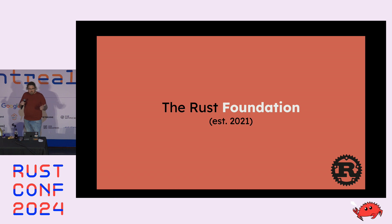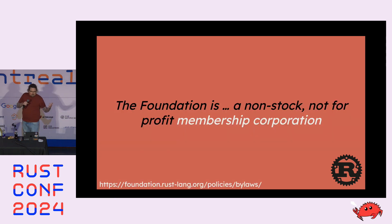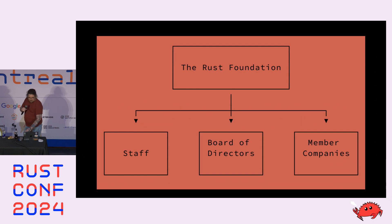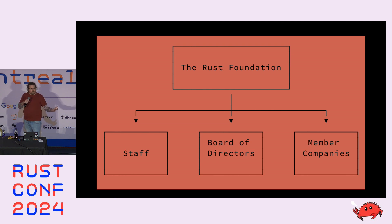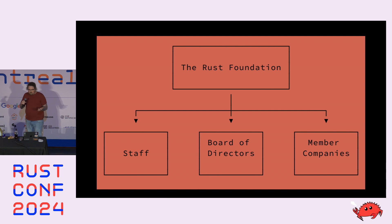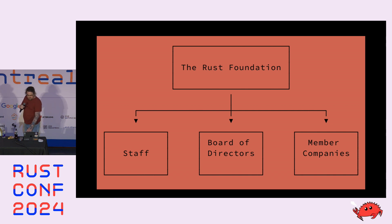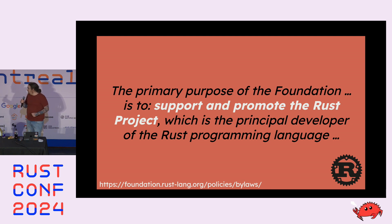Starting with the Rust Foundation — the younger of these two organizations, established in 2021 — this is a non-stock, non-for-profit membership corporation. The folks that work for it are largely broken up into three groups: full-time staff that run events like RustConf, a board of directors that makes decisions for the Foundation — some of those are companies that are sponsors — and there's even representation from the Rust project itself in that decision-making process.